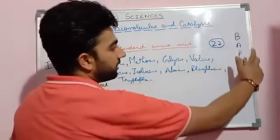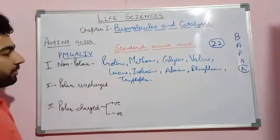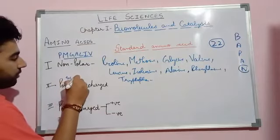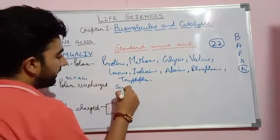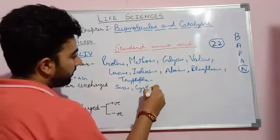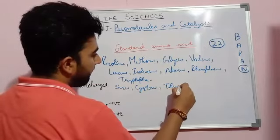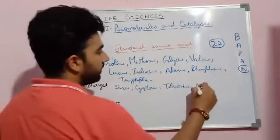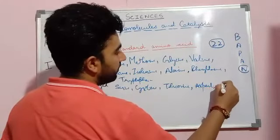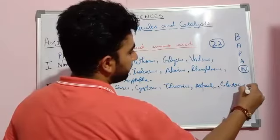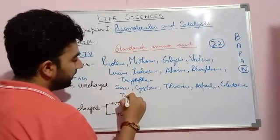The polar uncharged amino acids can be remembered with the mnemonic SC2. These amino acids are: serine, cysteine, threonine, asparagine, glutamine — that is five — and along with these, tyrosine. So these six are basically the polar uncharged amino acids.